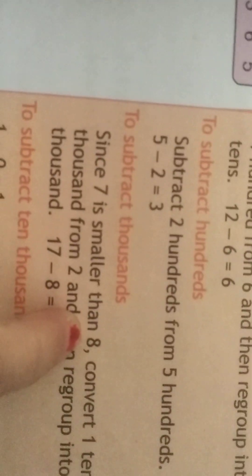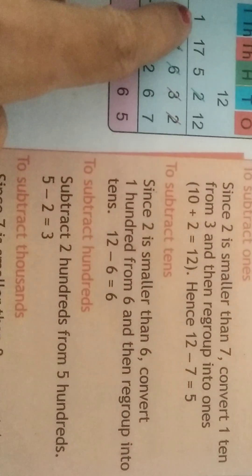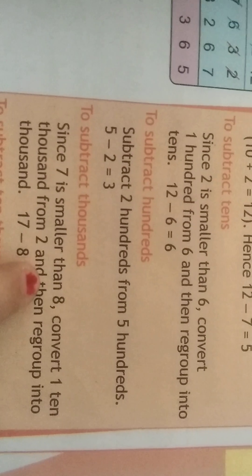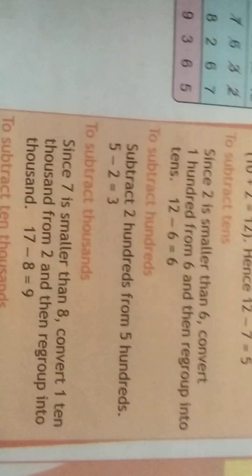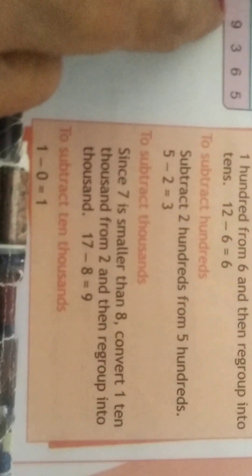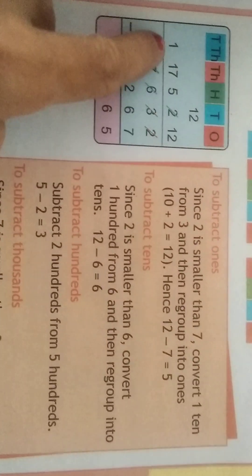In the thousands column, since 7 is smaller than 8, convert 1 ten thousand from 2 and then regroup it into thousands. Regrouping into thousands, we get 17 minus 8, that is 9. In the ten thousands column, 2 will become 1. As we have regrouped from ten thousands to thousands, it will become 1. We write 1 as such.